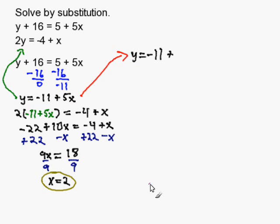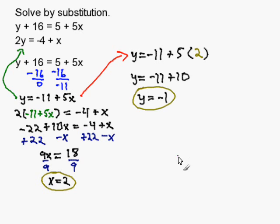I'm going to rewrite my equation. And notice for x, I'm going to write parentheses because that's where I'm going to substitute in my value. And that is 2. I simplify, and I get y equals negative 1.